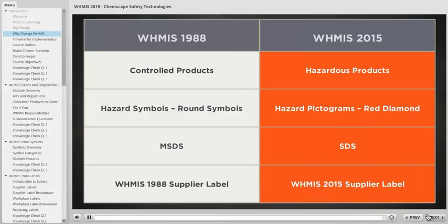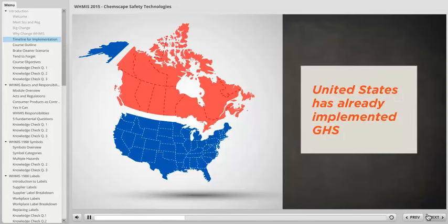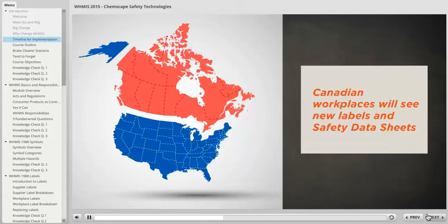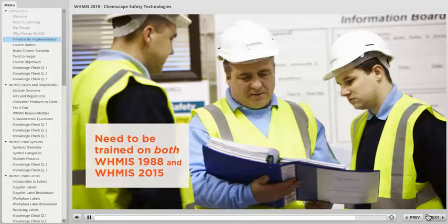When is all this change happening? Right now. In fact, most of our trading partners have already adopted GHS standards. Canada is actually one of the last countries to do so. Our biggest trading partner, the United States, has already implemented GHS with a deadline of June 2015 for compliance. That means Canadian workplaces will see new labels and safety data sheets entering their worksites if they receive chemical products from U.S. suppliers. We may see labels and symbols from both WHMIS systems, or see SDSs and MSDSs in the workplace. That's why we need to be trained during this transition phase on both WHMIS 1988 and WHMIS 2015.